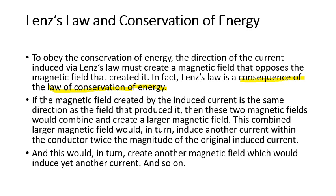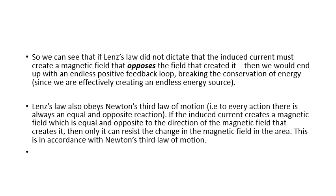If the magnetic field created by the induced current were in the same direction as the field that produced it, then the two magnetic fields would combine and create a larger magnetic field. This combined larger magnetic field would in turn induce another current twice the magnitude of the original, which would create another magnetic field inducing another, and so on — this is not possible. We can see that if Lenz's law didn't dictate that the induced current must create a magnetic field opposing the field that created it, we would end up with an endless positive feedback loop, which would break the conservation of energy principle. That is why Lenz's law always upholds conservation of energy.